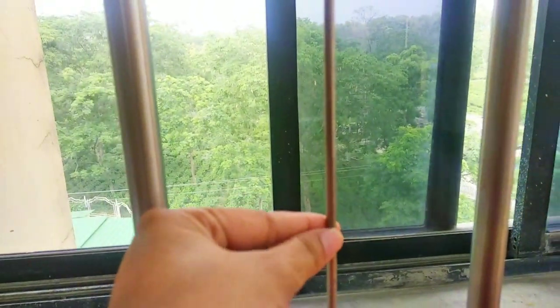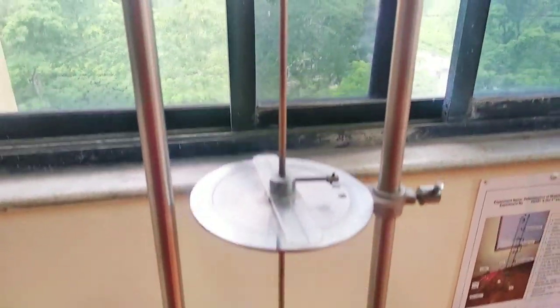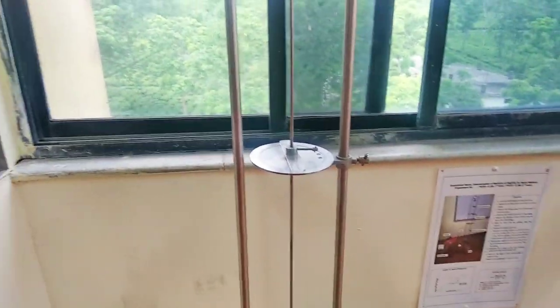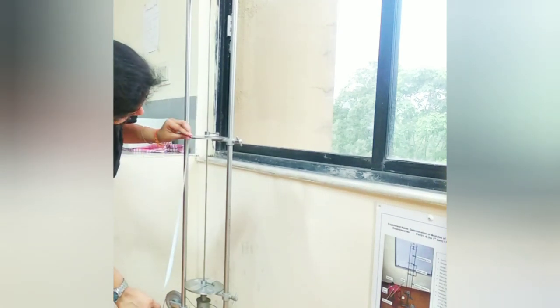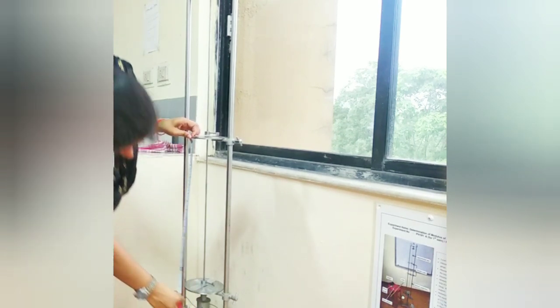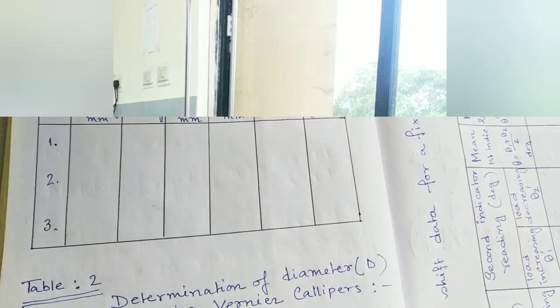If we see the apparatus closely, we can see this is the wire whose length we have to measure — that is small l. We know that force is directly proportional to the length. For measurement of the length of the wire, we have to take the length from the second indicator to ground position. That length will be considered.